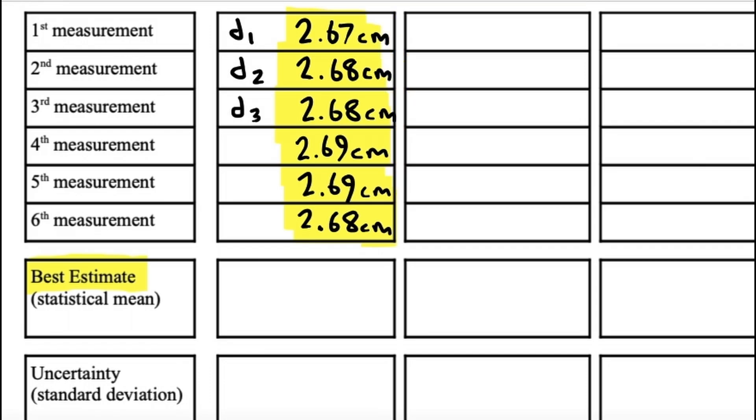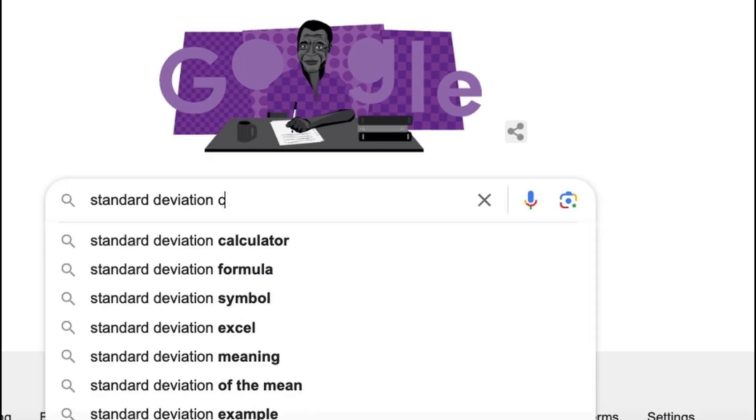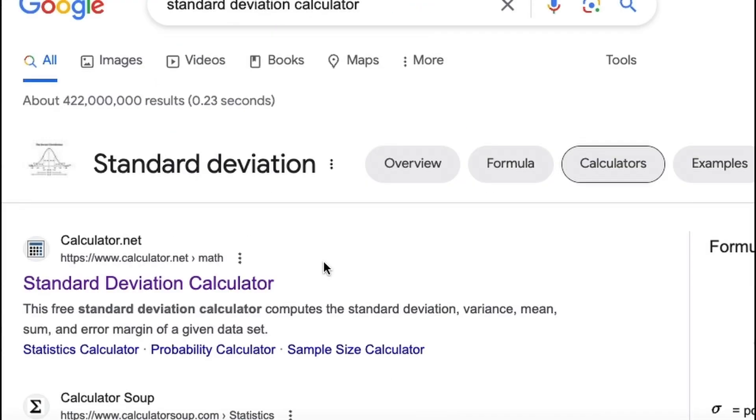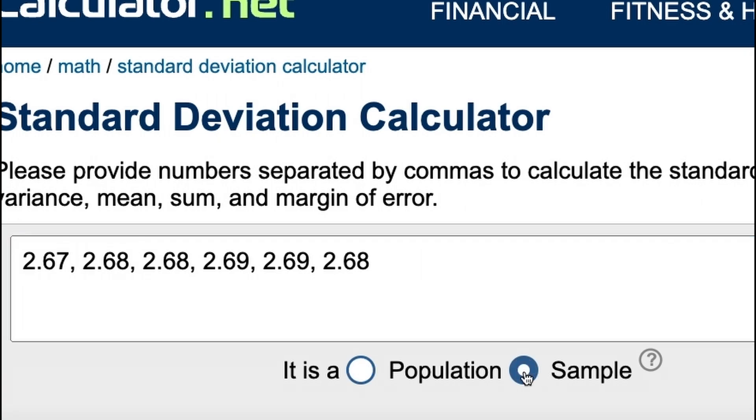So now we have that. We also have to find what's called now a best estimate. So the best estimate here is found by averaging all your individual measurements. So we want to get an average of this column. To do that, we'll use an online calculator. Let me pull up the web here. You just do a Google search for standard deviation calculator.